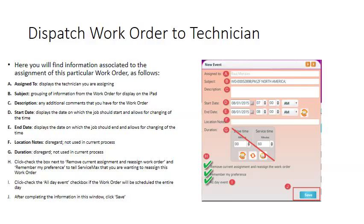Here you will find information associated with the assignment of this particular work order: A. Assigned To — displays the technician you are assigning. B. Subject — grouping of information from the work order for display on the iPad. C. Description — any additional comments that you have for the work order. D. Start Date — displays the date on which the job should start and allows for changing the time. E. End Date — displays the date on which the job should end and also allows for changing of time.